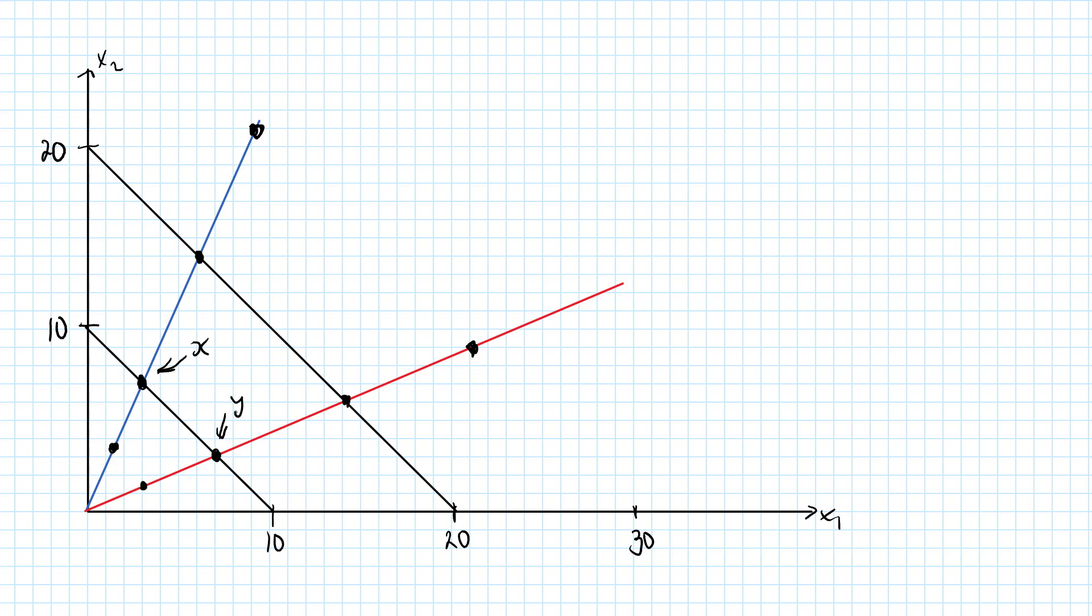If I double my x bundle I will get to this one, let's call it 2x. If I double my y bundle I will get to this one, let's call that 2y. Well, if the x and y bundle are on the same indifference curve, the 2x and 2y bundle must be on the same indifference curve.